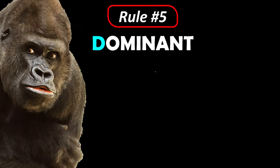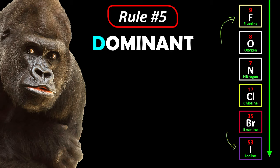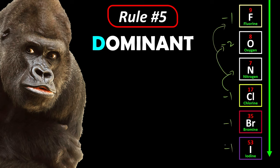Rule number five is D for dominant. Whoever is dominant won't change their oxidation number no matter what. Non-metals show dominance based on electronegativity. Going down the series, electronegativity decreases. Fluorine is the most electronegative and most dominant, always −1. Oxygen is usually −2 except when mixed with fluorine. Chlorine is usually −1, except when mixed with whoever is above it in this series. Same with bromine and iodine.